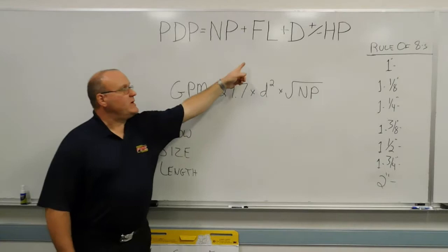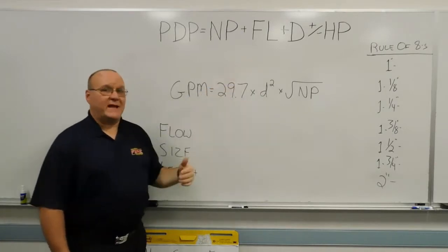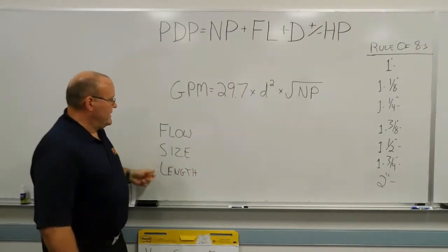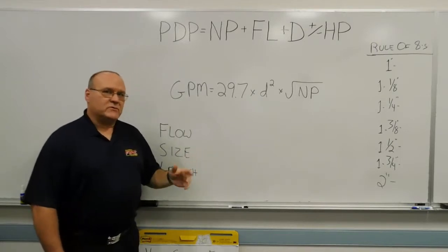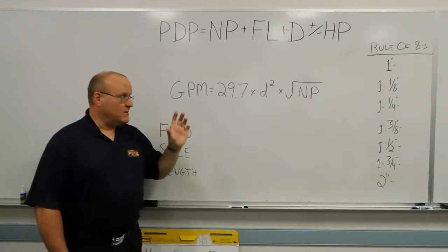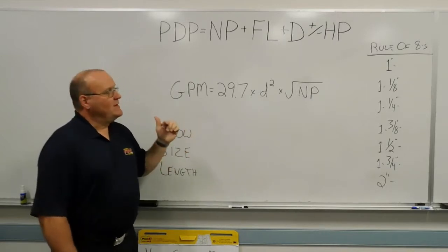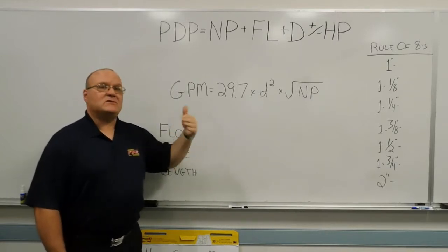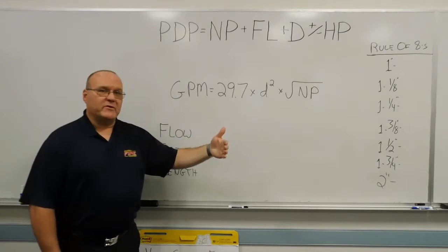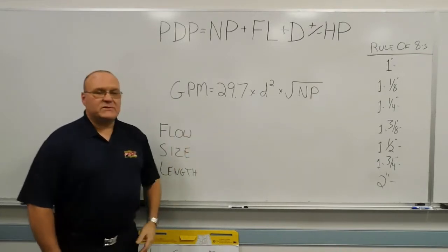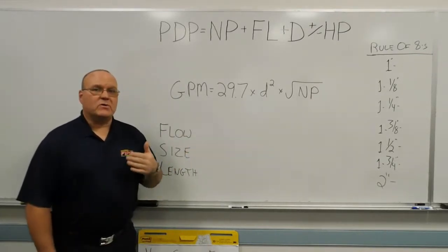And if you'll remember, when we try to calculate our friction loss, we always want to account for the flow, the size, and the length. And in most of those examples, we discussed calculating the friction loss with a given gallon per minute. What we did not discuss was how did we get to that gallon per minute flow. So today's topic is going to be estimating or determining your gallon per minute flow.